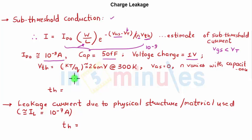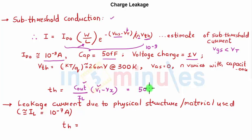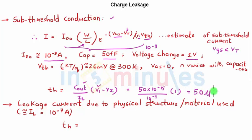Substituting the subthreshold current into the hold time equation: t_H = C_out / I_L · (V1 − V_x). With C_out = 50 fF (50 × 10⁻¹⁵), I_L = 10⁻⁹ A, and V1 − V_x = 1 V, we get t_H ≈ 50 microseconds. This means the circuit requires a minimum operating frequency, which we'll explain further in subsequent clips.